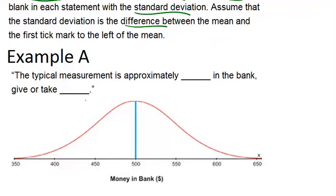The typical measurement, that's going to be the mean, because for normally distributed data, the mean is the value with the highest probability of occurring. So in this case we can see that the mean is down here at $500. So the typical measurement is $500.